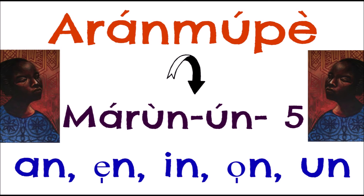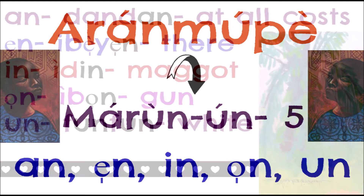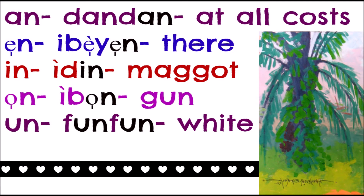Back to vowels — we also have the aromupe Faweli. Aromupe means you make nasal sounds to pronounce these vowels. 'Imu' is nose and 'ramu' means to make a nasal sound. If you use only A, E, I, O, U as the standard for Yoruba vowels, you're going to miss these nasal vowels.